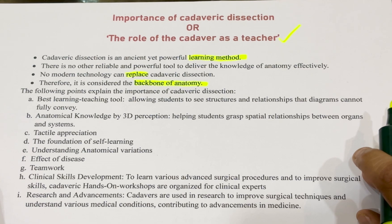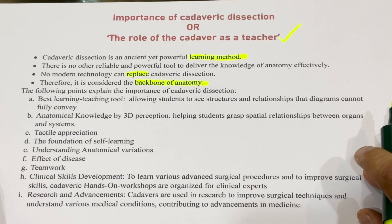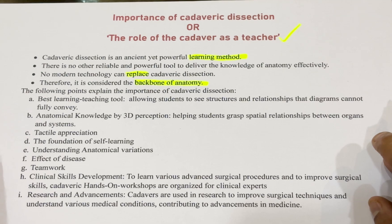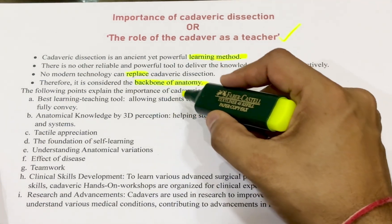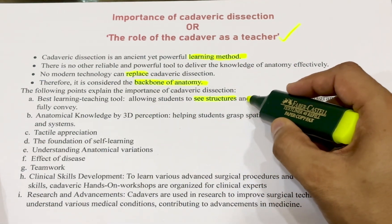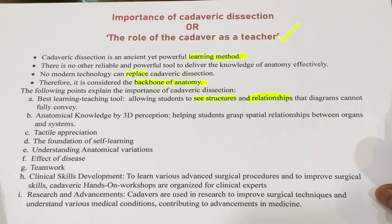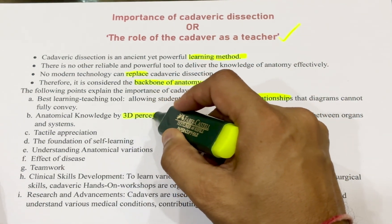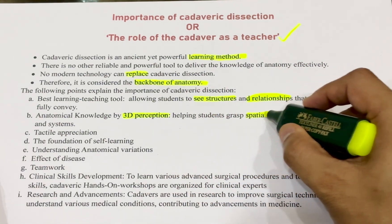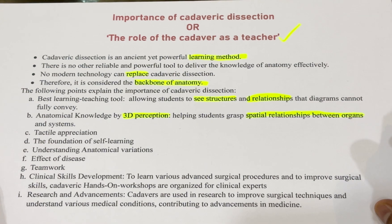After giving this introduction, you should write down some important points. I suggest you highlight all these points one by one, as it is a 4-mark short note in different university exams. The first point is that it is the best learning and teaching tool — once you dissect the cadaver, it helps the student to see structures and their relationships, which cannot be fully conveyed through diagrams. The second importance is that cadaveric dissection provides a 3D perception of different organs, so the spatial relationship between organs and adjacent structures is best appreciated through dissection.